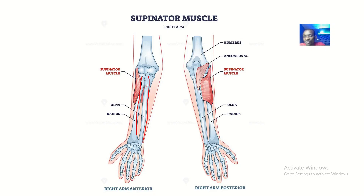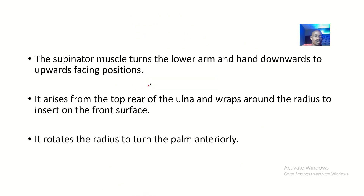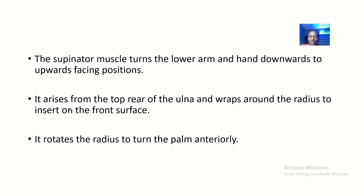The supinator muscle turns the lower arm and hand from facing downwards to face upwards. It arises from the top rear of the ulna and wraps around the radius to insert on the front surface. Its function is to rotate the radius so the palm turns upward, or anteriorly.